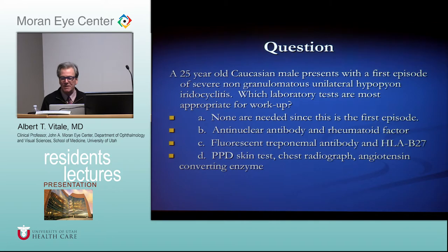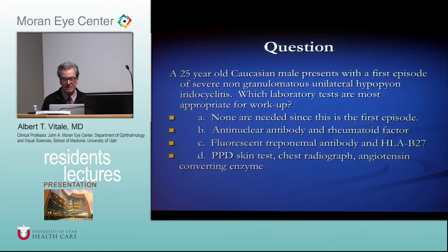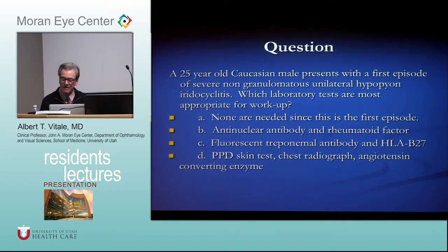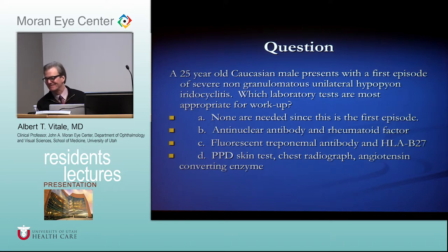A 25-year-old white male presents with his first episode of severe unilateral hypopyon uveitis. What labs are most appropriate for initial workup? None — it's his first episode. However, HLA-B27 does offer prognostic information. It's not diagnostic, but it's important because if you make this diagnosis, you get them into the hands of a rheumatologist and onto disease-modifying medication.